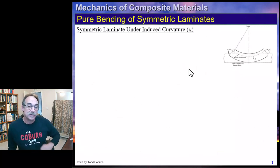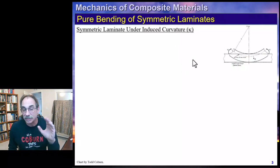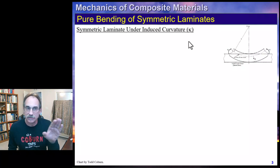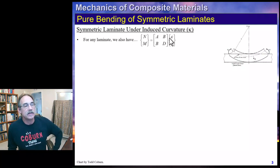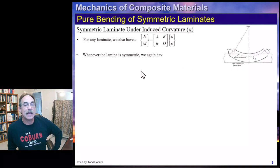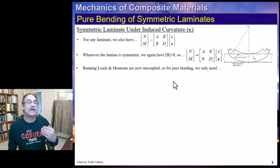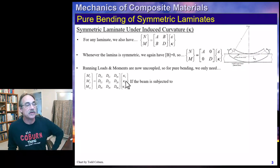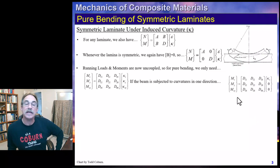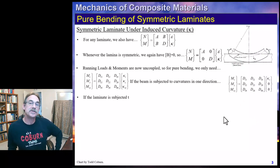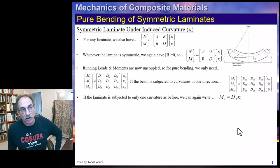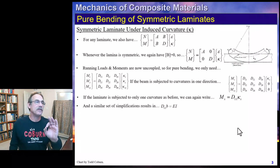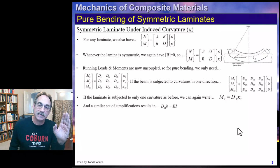Now let's look at a symmetric laminate. We're at a laminate and we're talking about a symmetric one. Let's start with one that has an induced curvature — one curvature, the rest are all zero. Since the laminate is symmetric, our B matrix is zero, so our running loads and moments are uncoupled. If we have just one curvature applied, we find again that our moment is related to our curvature through the D11 term. A similar set of simplifications can show that D11 times B is equal to EI — this is very powerful.